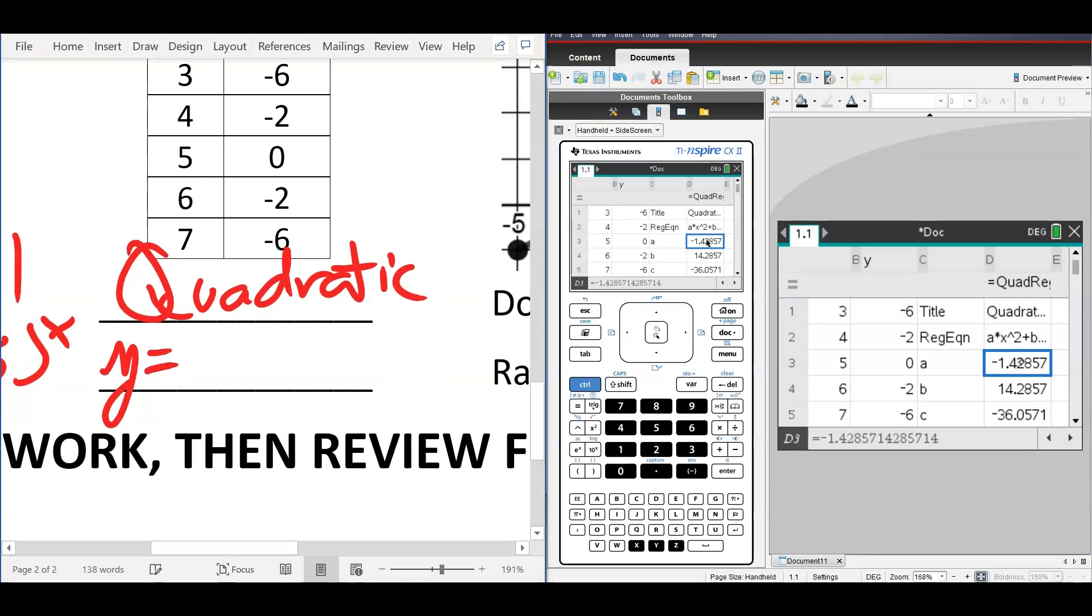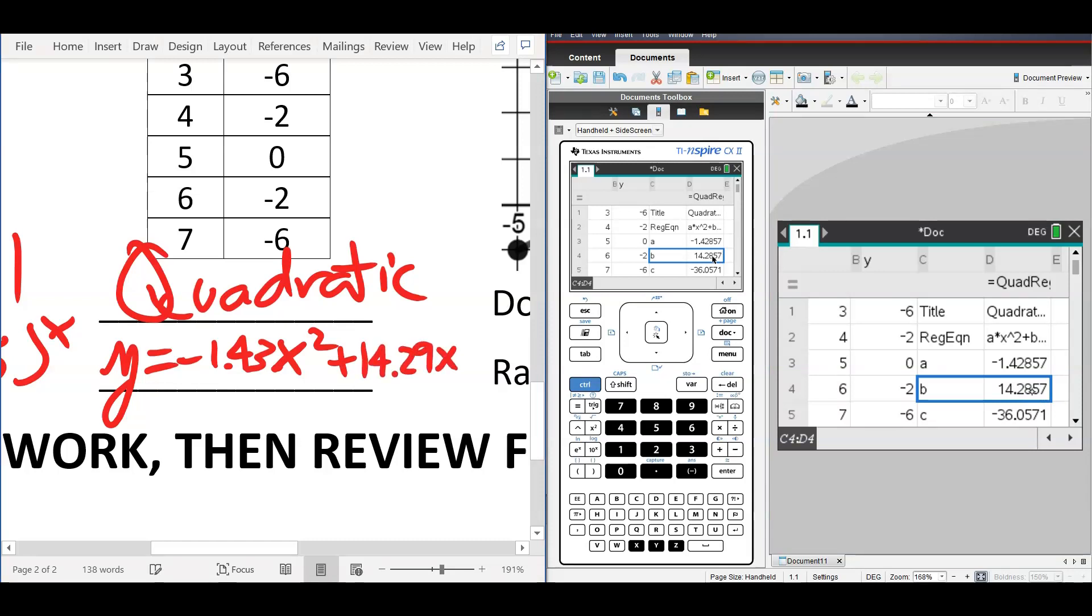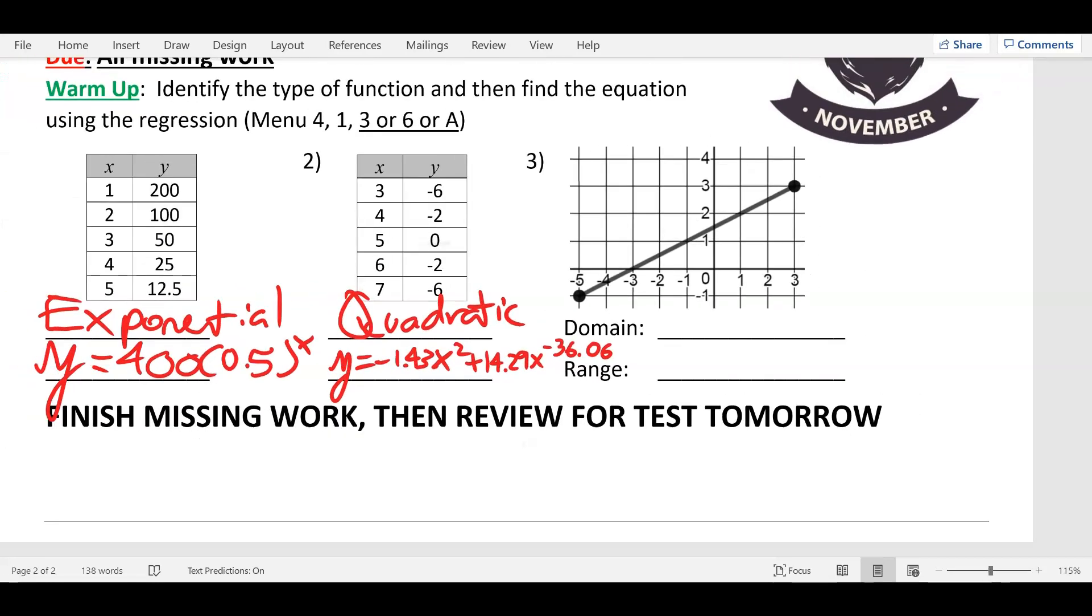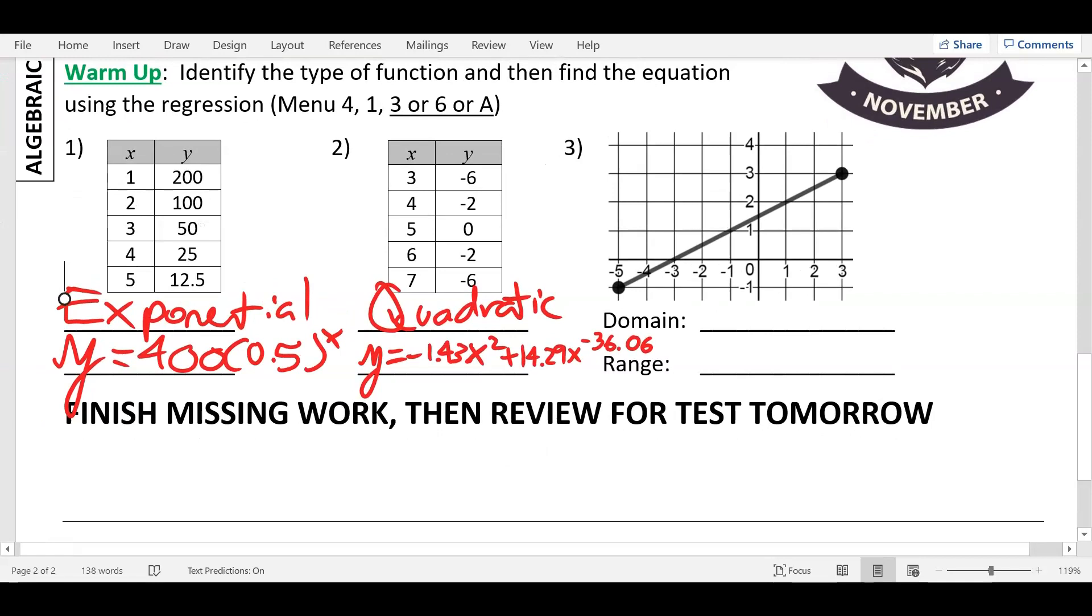But you need to write it as AX squared plus BX plus C. So here we go. Y equals A, negative 1.43, we're going to round that, X squared. And then my B is 14.29 plus 14.29X. So y'all remember how to round, right? This 2, next to it is an 8. The 8 makes the 2 round up. And then plus C, which is minus 36.06. And you will, on your review and probably on your test, have these ugly numbers. You've got to be able to match it up with multiple choice.